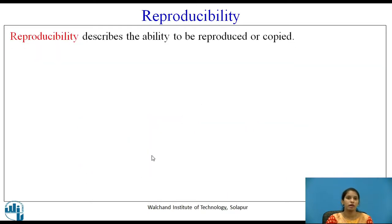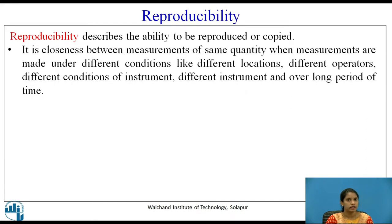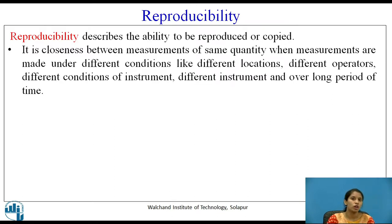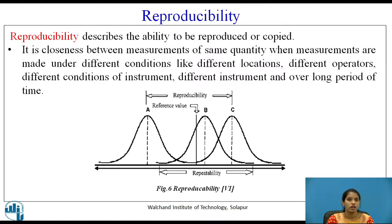Reproducibility describes the ability to be reproduced or copied. It is the closeness between measurements of the same quantity when measurements are made under different conditions — such as different locations, different operators, different instrument conditions, different instruments, and over a long period of time. Figure 6 shows reproducibility, illustrating repeatability versus reproducibility with a reference value line.